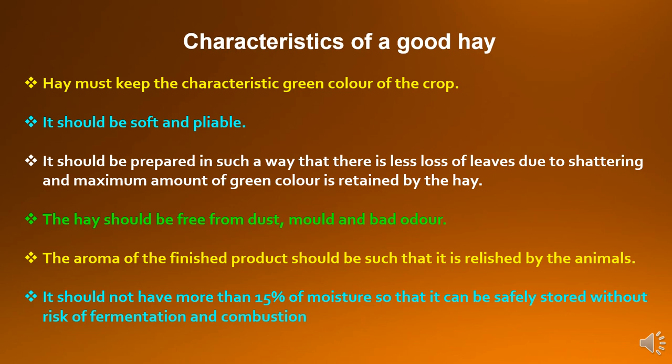Characteristics of a good hay: Hay must keep the characteristic green color of the crop. It should be soft and pliable — pliable means flexible — and it should be easily consumable by animals. Hay should be prepared in such a way that there is less loss of leaves due to shattering and maximum amount of green color is retained. The hay should be free from dust, mold and bad odor. The aroma of the finished product should be such that it is relished by the animals, and it should not have more than 15% moisture so that it can be safely stored without risk of fermentation and combustion.